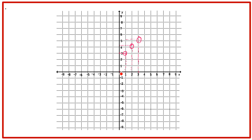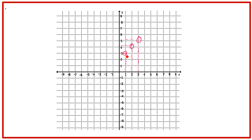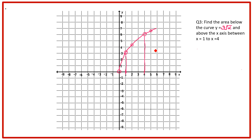अब यह values graph में एक-एक करके लिखनी होंगी। (0,0) पहला point, फिर (1,3), फिर (2, 4.23) — इस तरह सारे points plot करते हैं। इन्हें join करने पर हमारे पास curve बन जाती है जो y = 3√x को represent करती है।